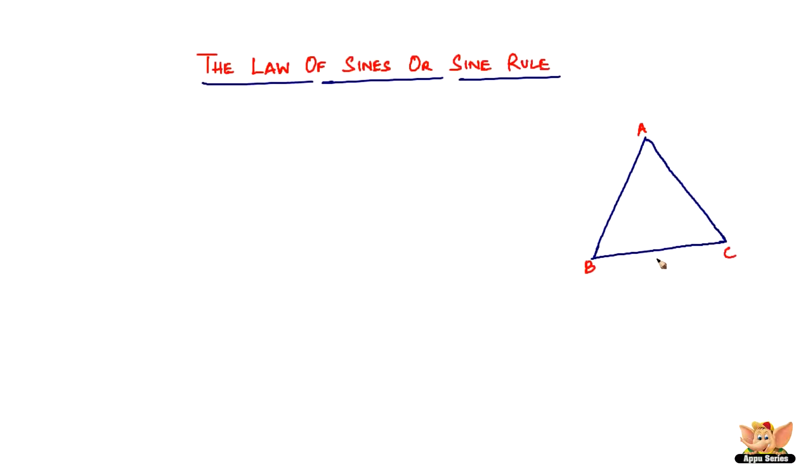Let the lengths of the triangle be A units, B units, and C units. The reason I'm writing A, B, C like this - there's a reason. That's the whole point of the law of sines or sine rule.